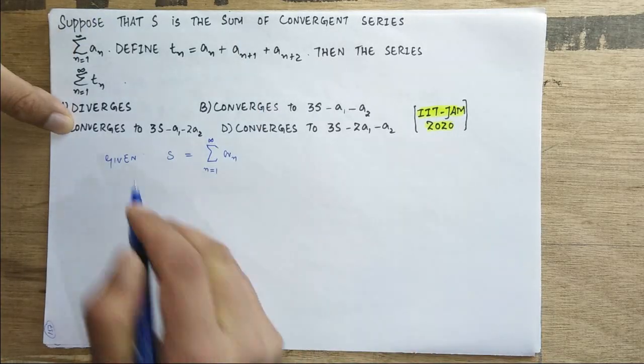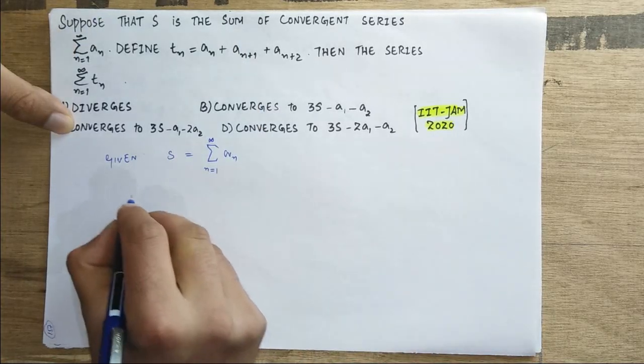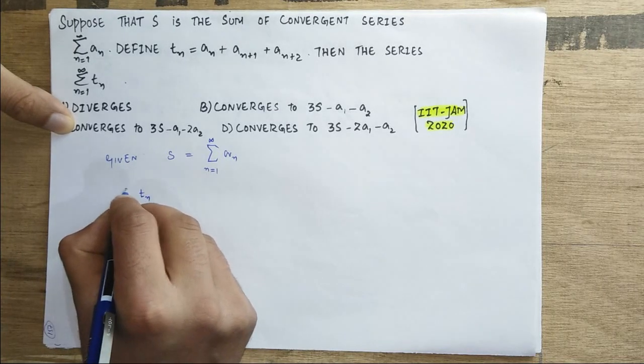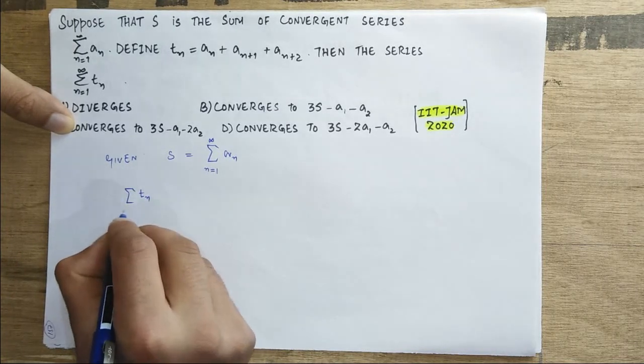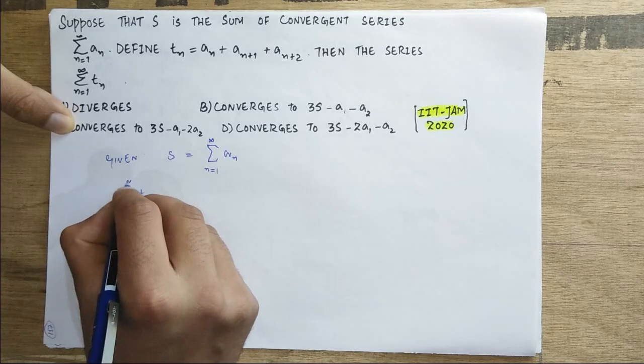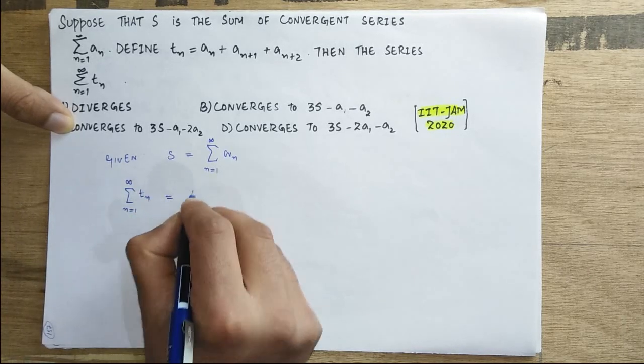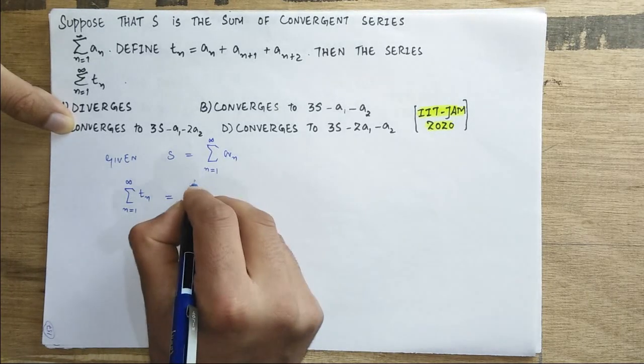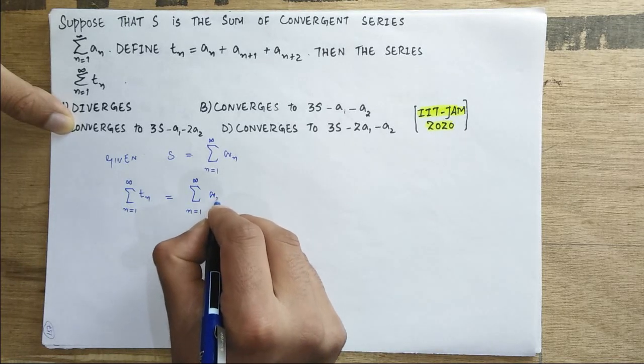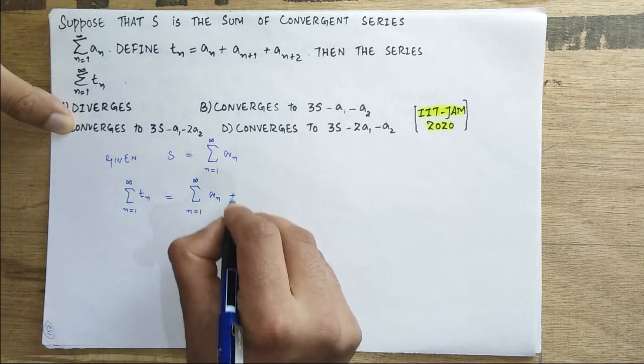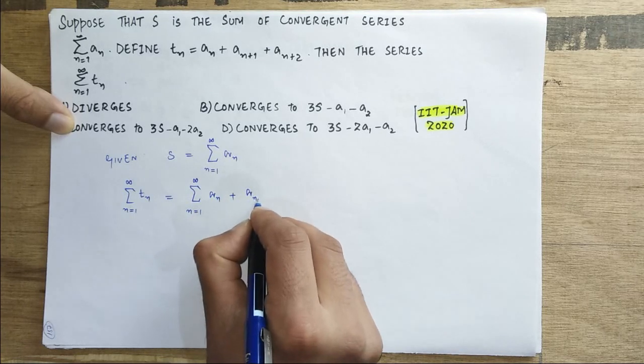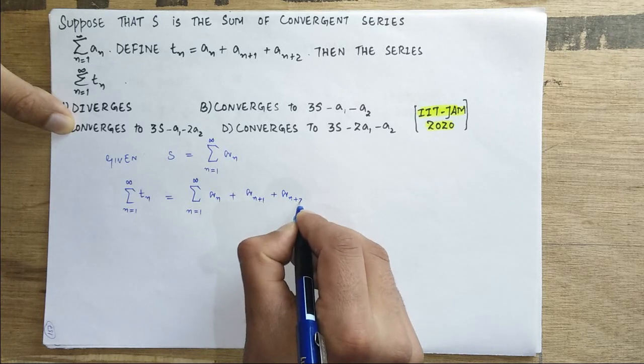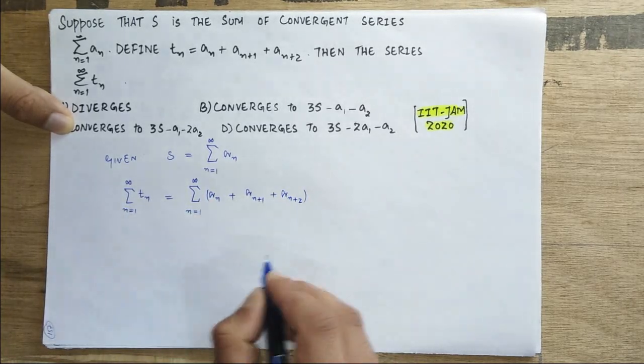Now let us see that we have to calculate sum of t_n, n from 1 to infinity. That will equal summation n from 1 to infinity of (a_n plus a_(n+1) plus a_(n+2)). This is summation of t_n.